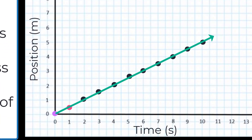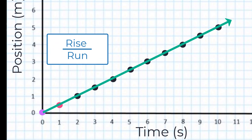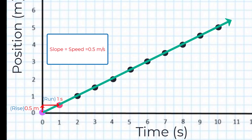One way to quickly identify the slope of a line is to analyze the rise of the line compared to the run. The red ball increases its position by 0.5 meters on the y-axis — this is the rise. The run is one second on the x-axis. When we compare the rise to the run, the result is a rate of 0.5 meters traveled every second. This is a measurement of speed.